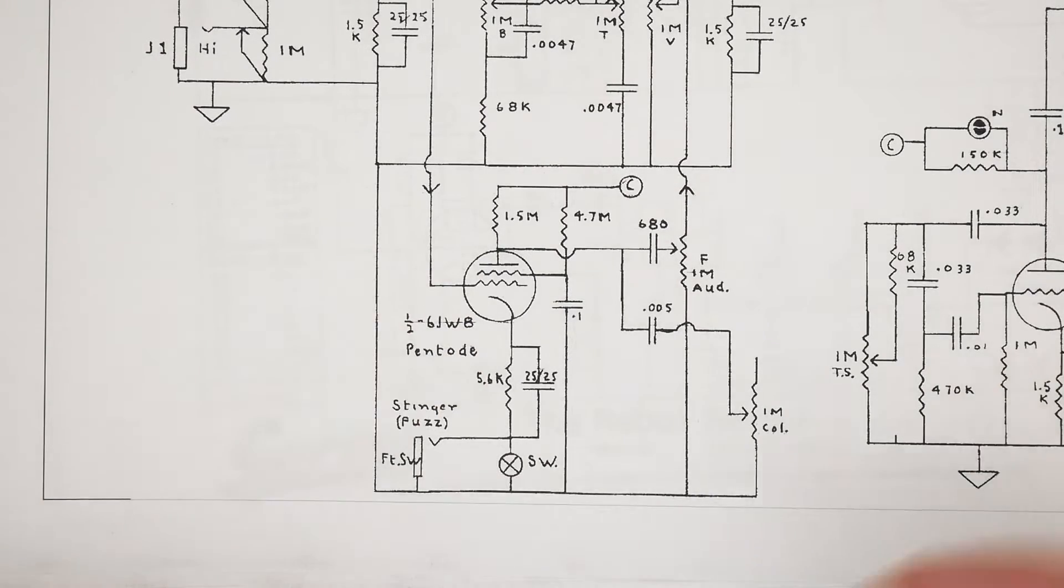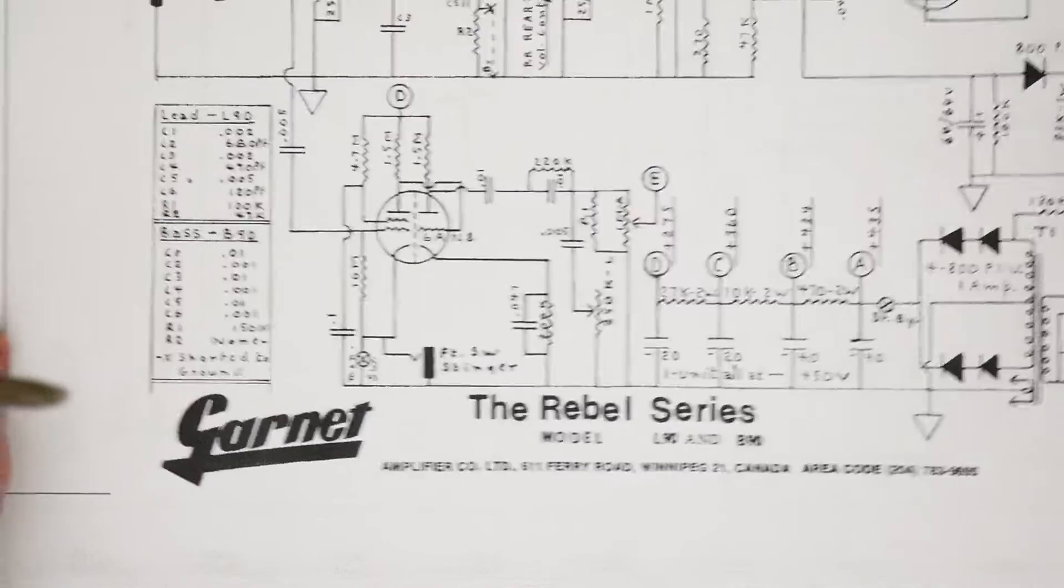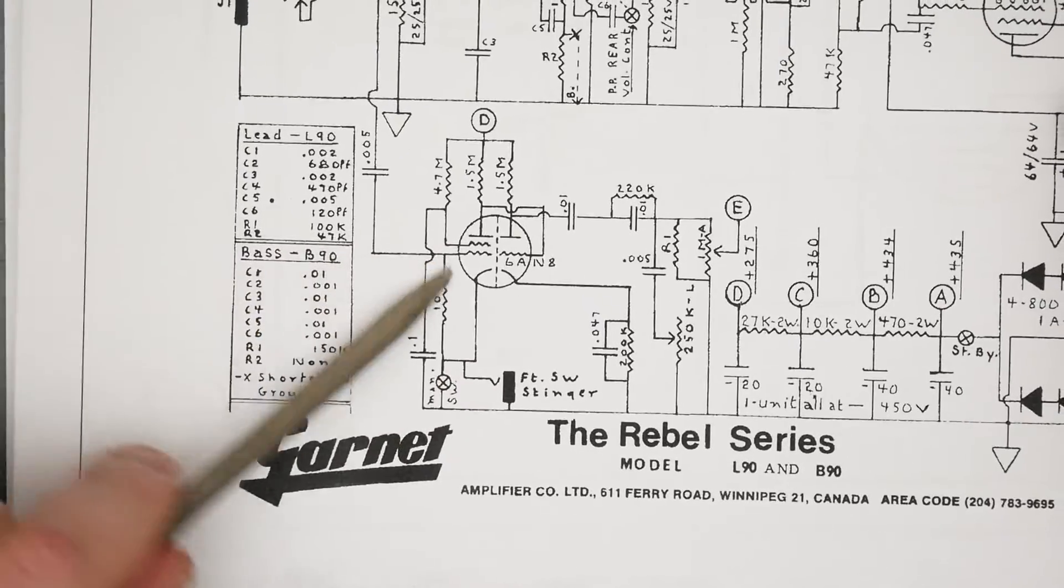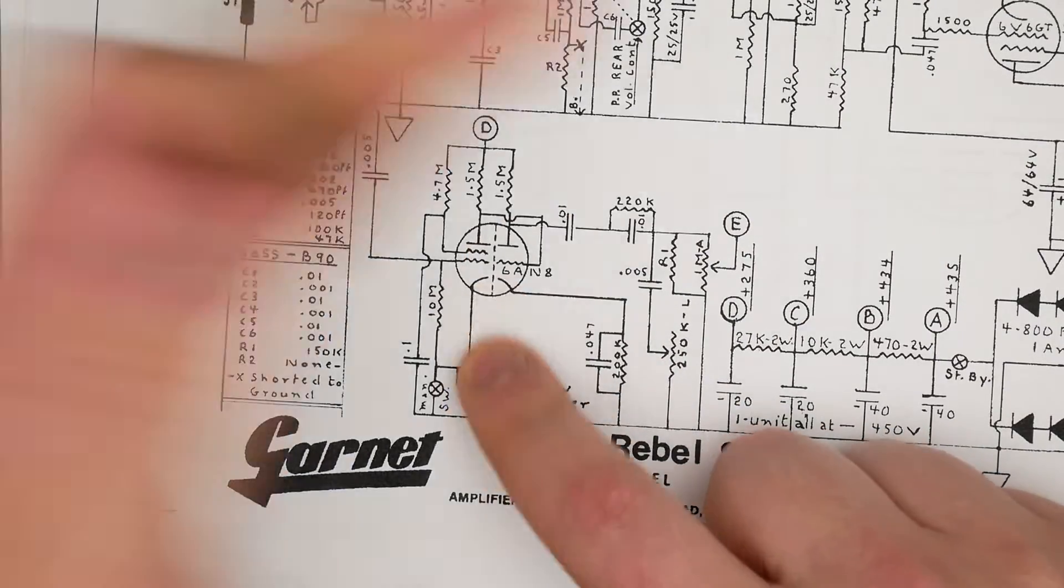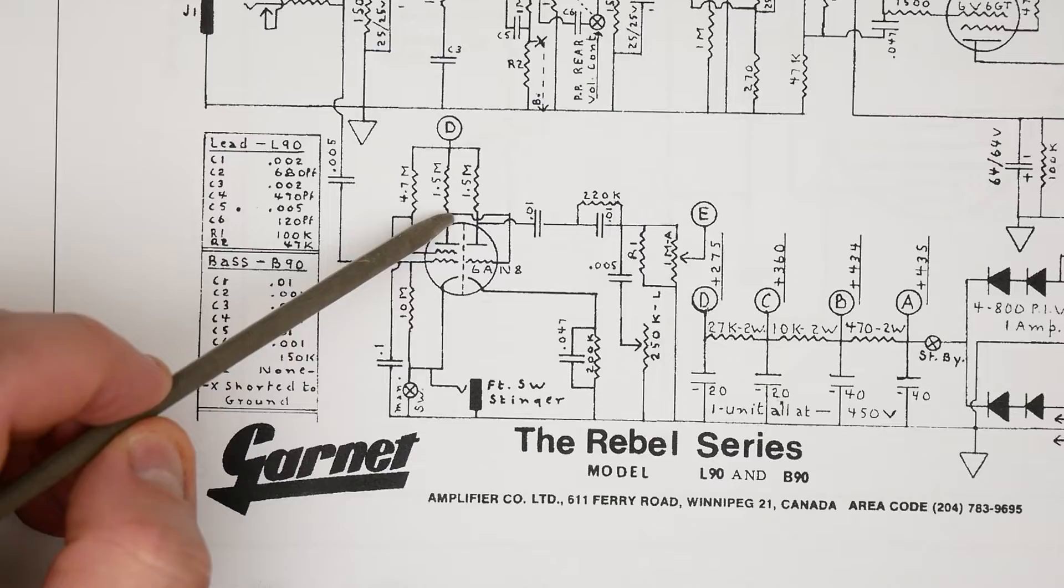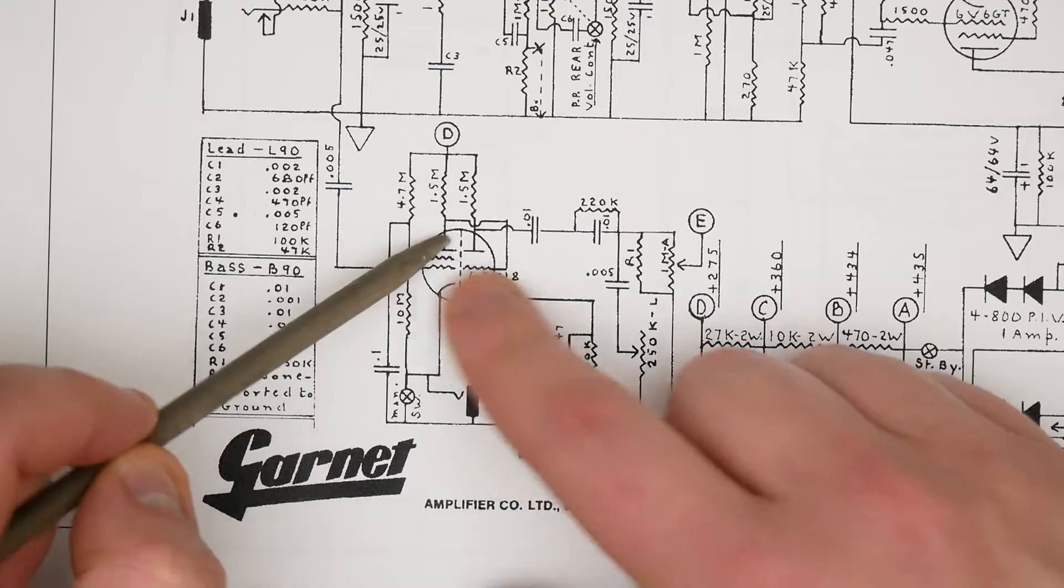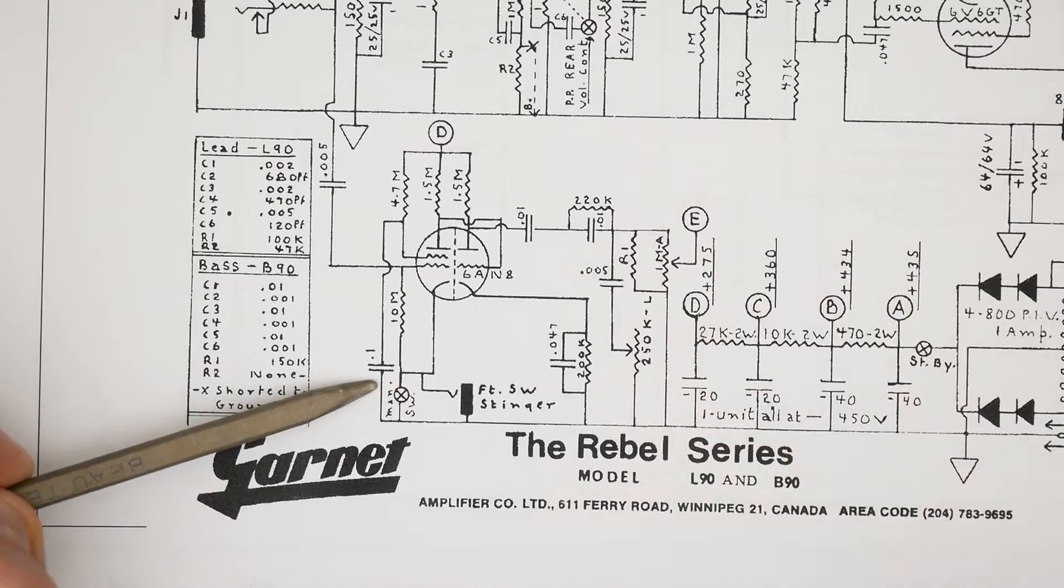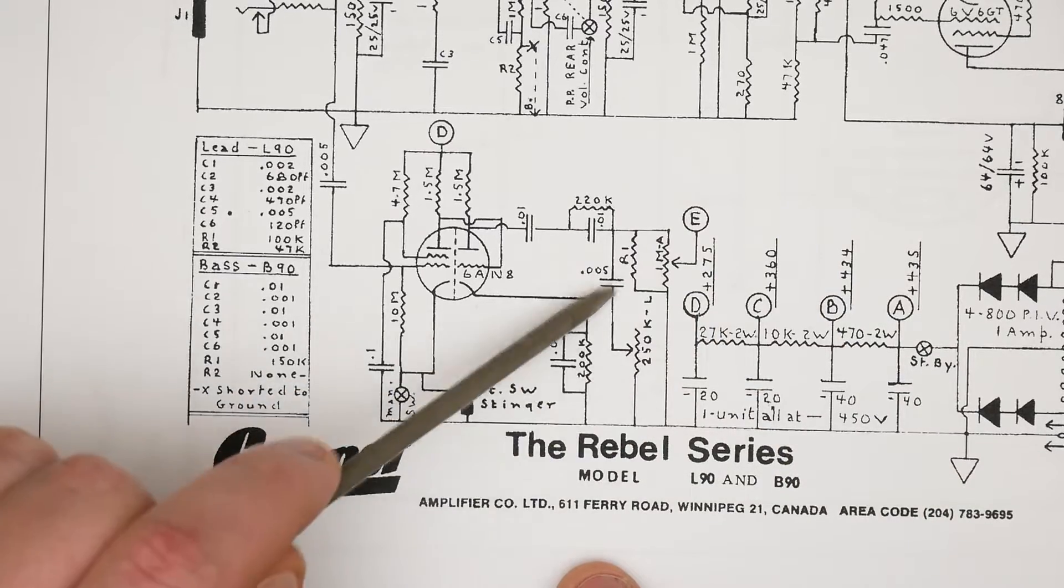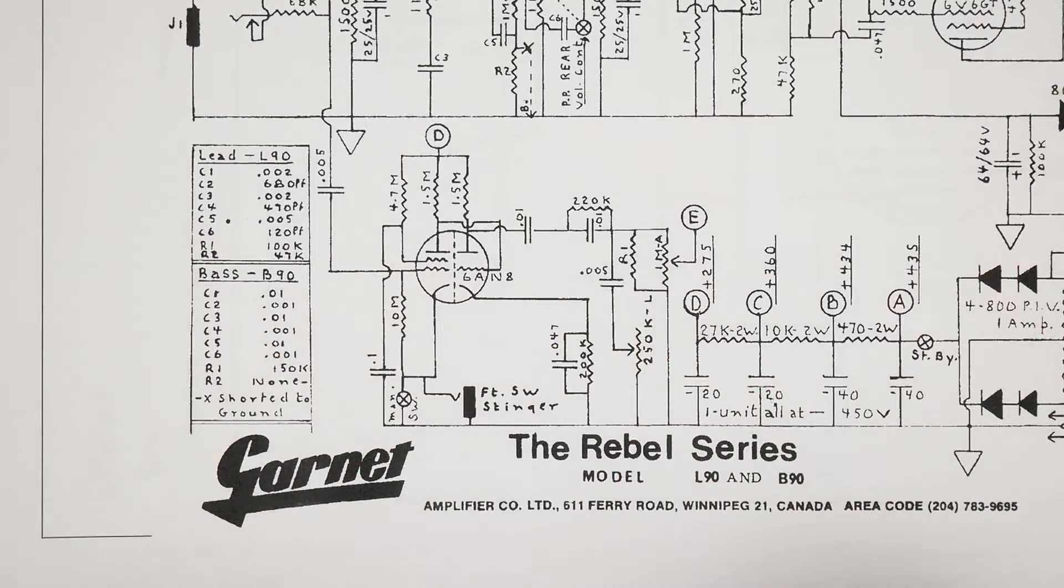This was I believe the second version of the Stinger and the much more commonly used one. The version we're going to make, however, is the earlier version which used both sides of a 6AN8 tube. The 6AN8, like the 6JW8, is a half pentode, half triode. In this case you can see with this line coming across and back down, the triode here is direct coupled to the plate of the pentode. The cathode of the pentode is connected directly to ground when the footswitch is engaged.